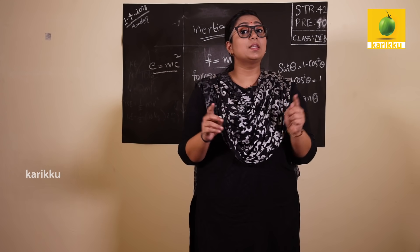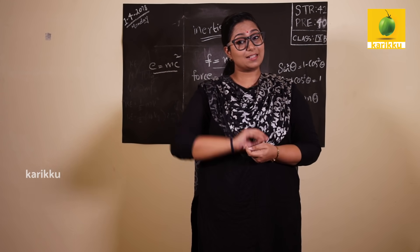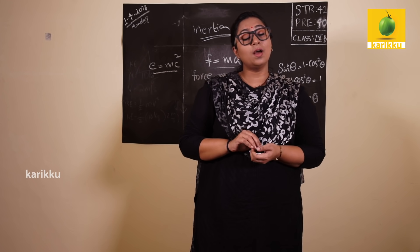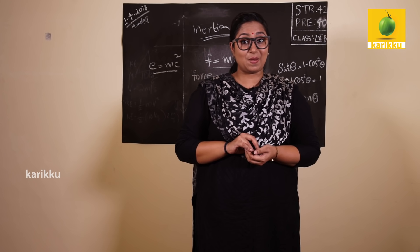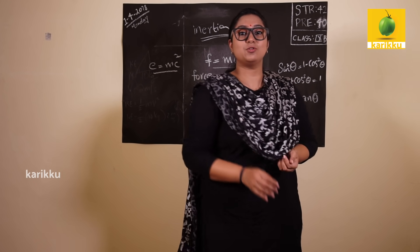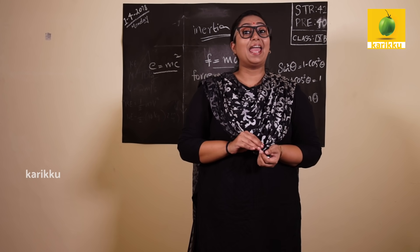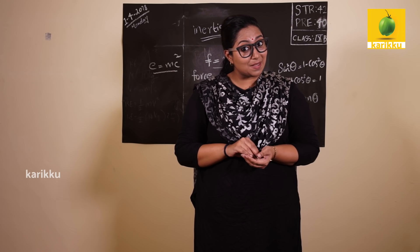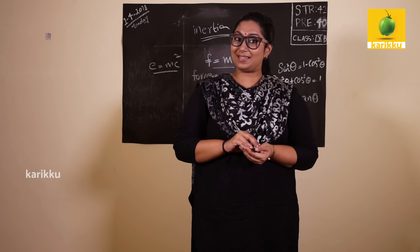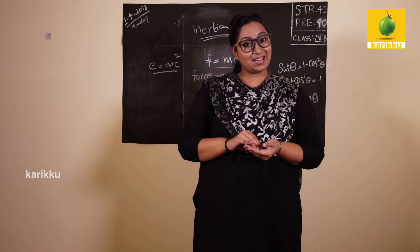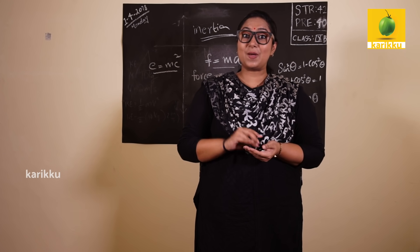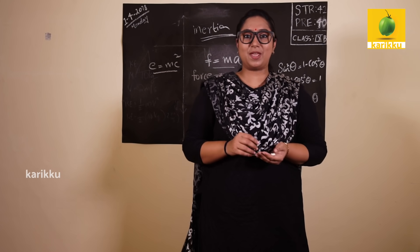A plus B the whole square is equal to A square plus B square plus 2AB. A minus B the whole square is equal to A square plus B square minus 2AB.